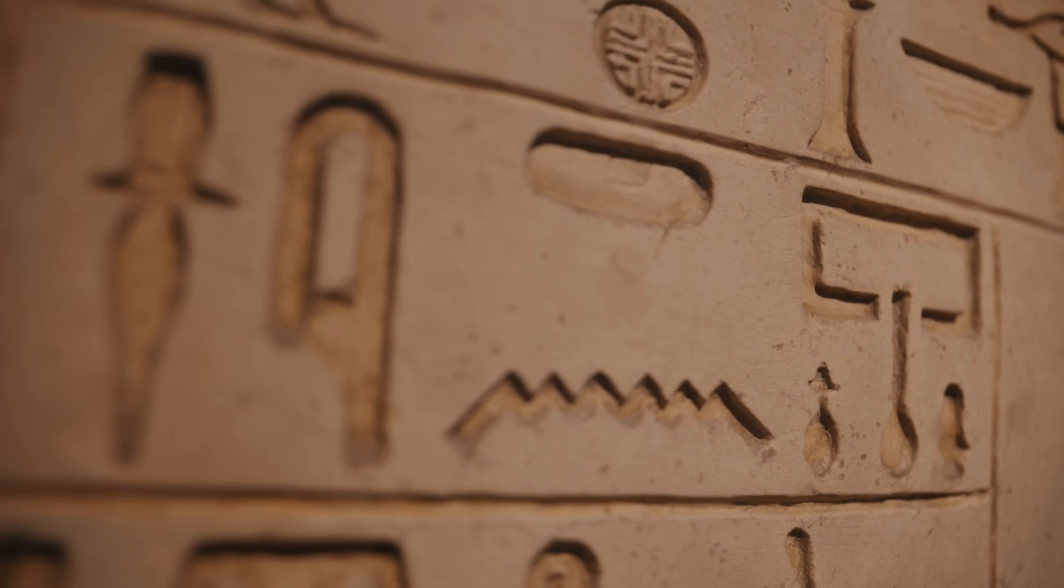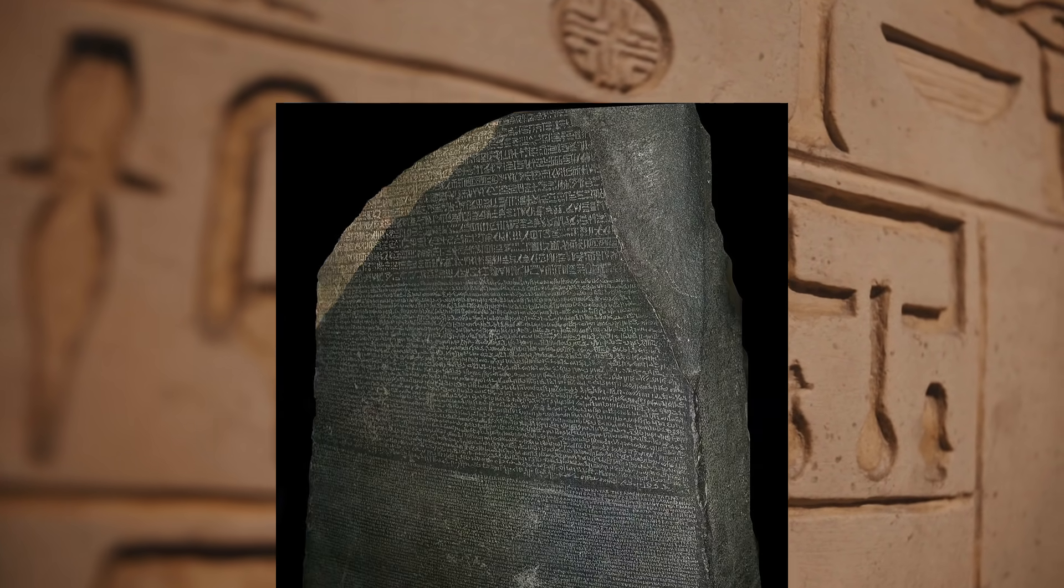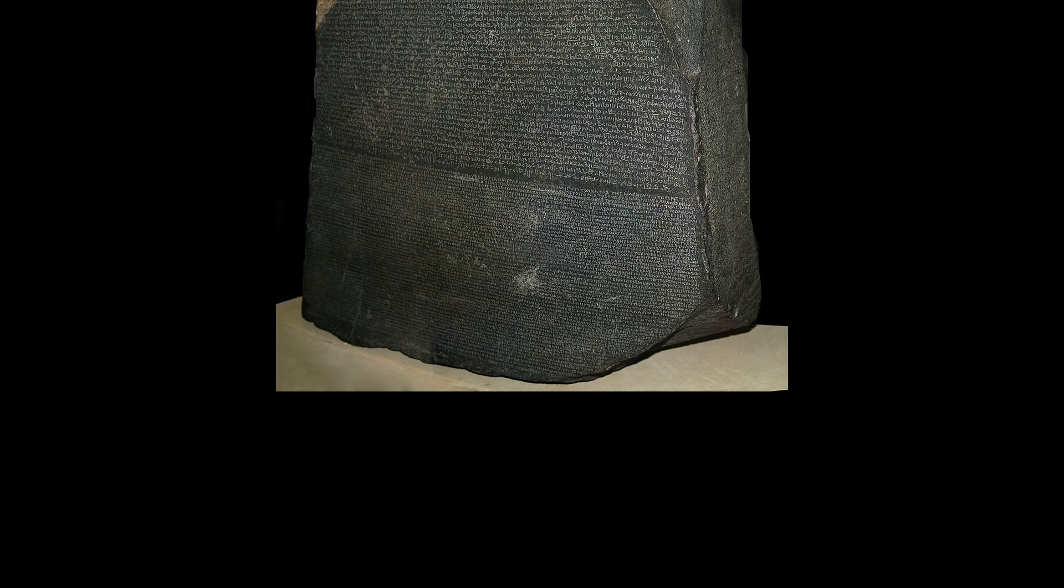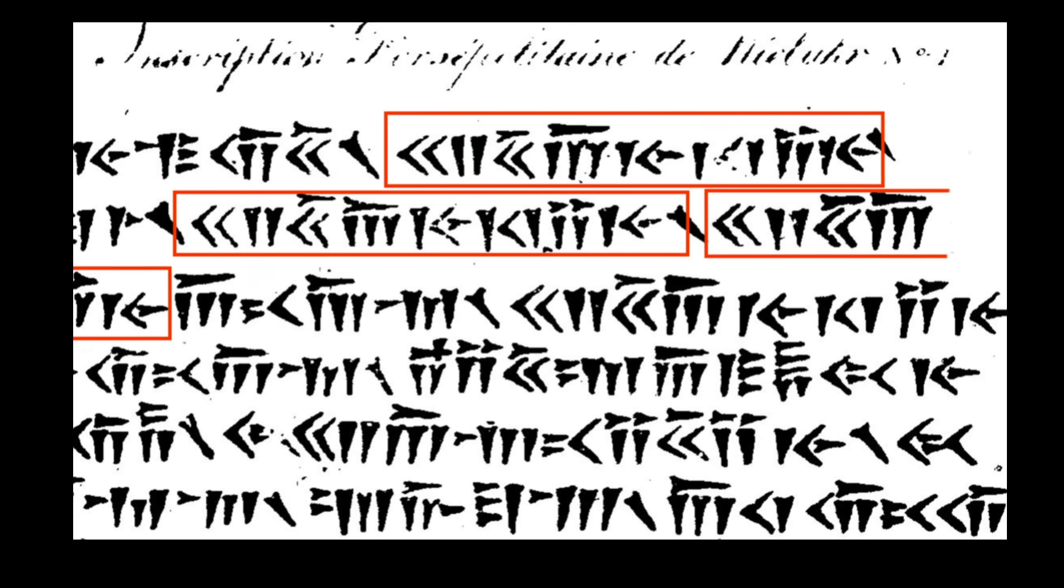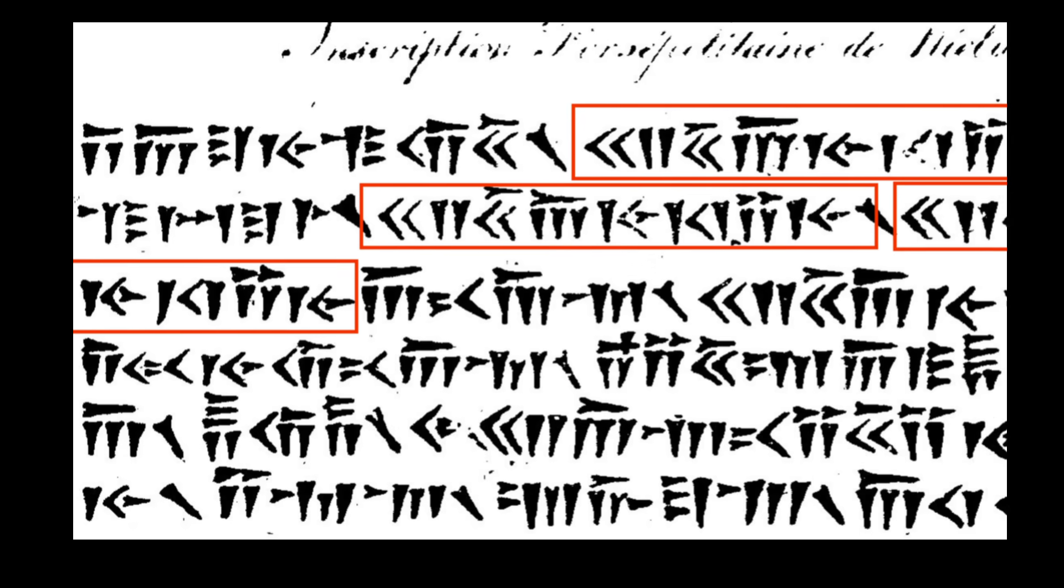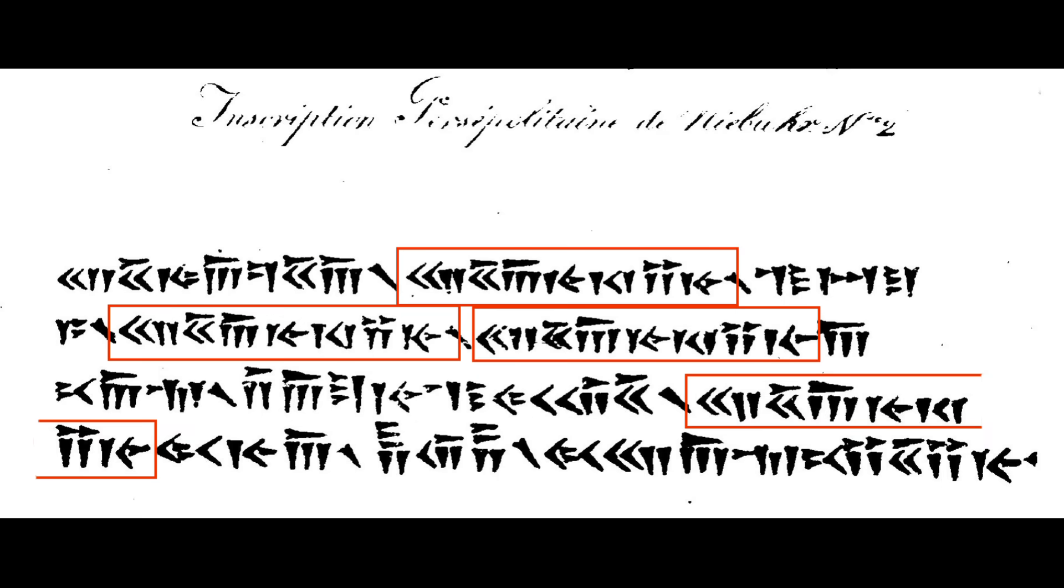We have been able to read the Egyptian hieroglyphs with the help of Rosetta Stone. We have been able to read cuneiform due to the Naboor inscription and many such cases. But for the Indus script, there is no Rosetta Stone.